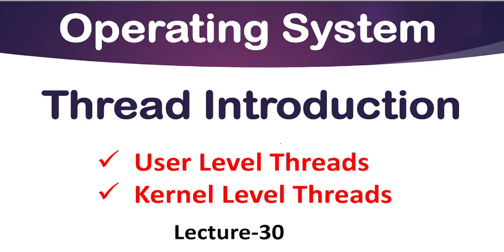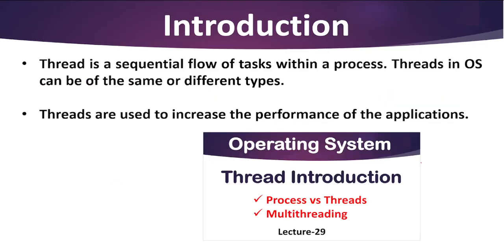Welcome back to the channel. Coming back to the topic of threads introduction, today we are going to discuss different types of threads — that is user level and kernel level threads. In the previous lecture we already discussed threads introduction, process versus thread, and multithreading. Threads are nothing but the path of execution within a process, and a process can contain multiple threads that may have same or different properties.